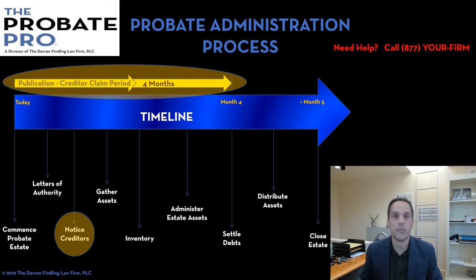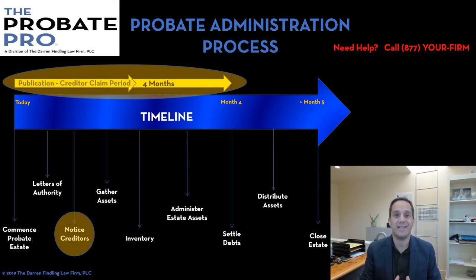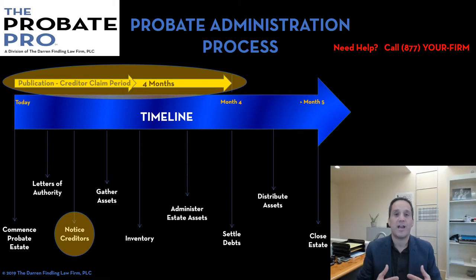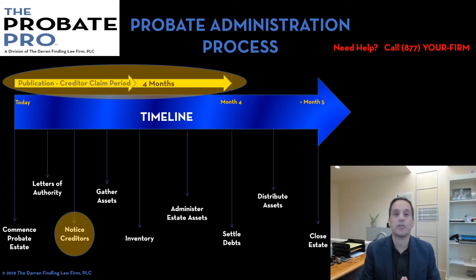Specifically, we're looking at the highlighted areas here on this general timeline. Creditors are individuals or entities that the estate may owe money to, so they are a liability of the probate estate — not an asset, but rather an expense or liability upon which the estate may owe. Those creditors are entitled to notice in two primary ways.